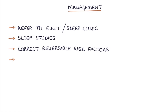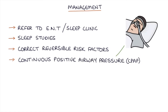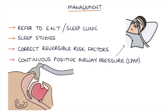The next step is to use a continuous positive airway pressure, or CPAP, machine that provides continuous pressure into the airway. This helps to maintain and keep the airway open so that they can breathe normally, and it doesn't collapse and cause apnea.